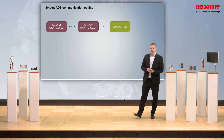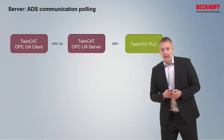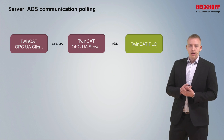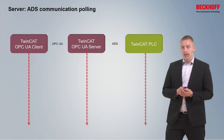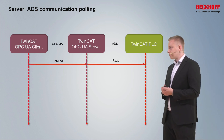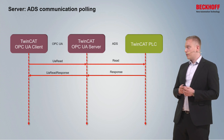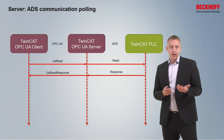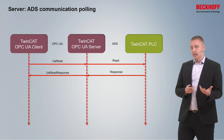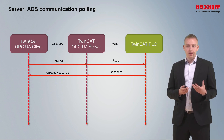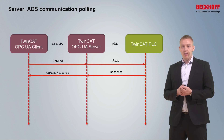The TwinCAT OPC UA server communicates with the PLC runtime via the ADS protocol. The first way of communication is polling: the OPC UA client sends read requests at a specified interval to the OPC UA server, which then communicates with the PLC runtime at the same interval. The disadvantage is that if a variable is not changing often, communication still takes place even when the variable's value hasn't changed. For such cases, OPC UA offers a more elegant approach: subscriptions.